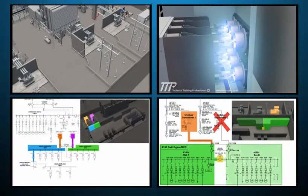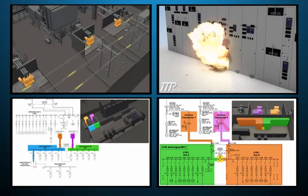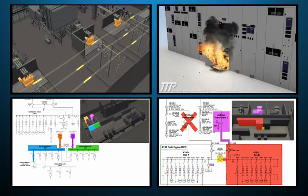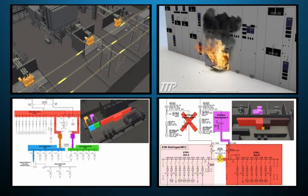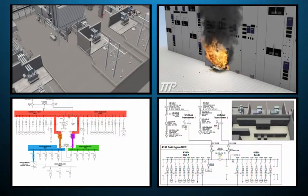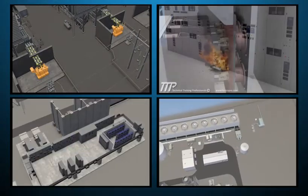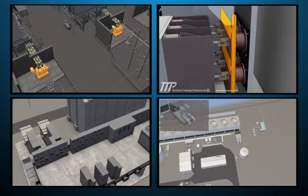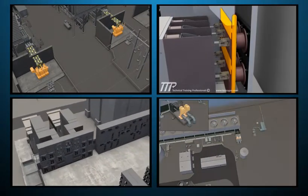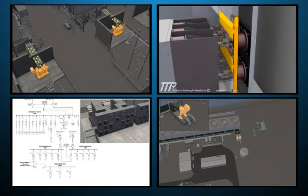The TTP electrical distribution course covers the design and function of a typical combined cycle plant electrical system. The electrical distribution system of a power plant provides the means to export generator power to the local grid. The system must also power all loads at the facility, providing reliability and safety for critical mechanical systems.